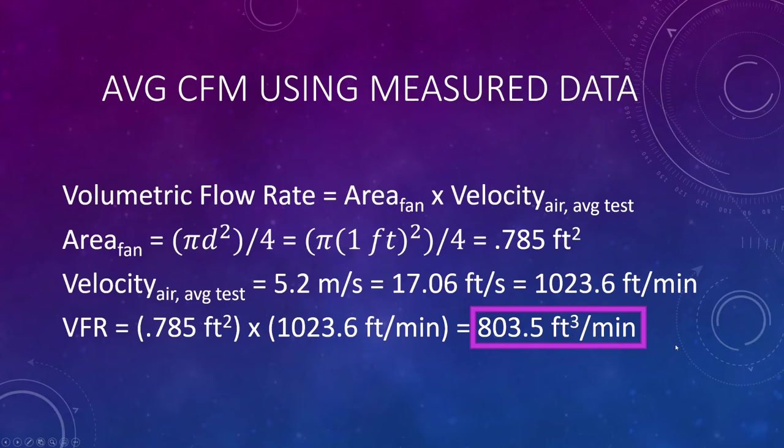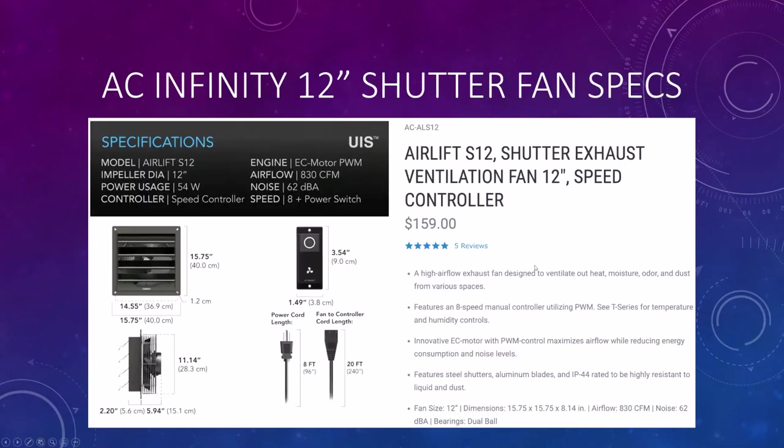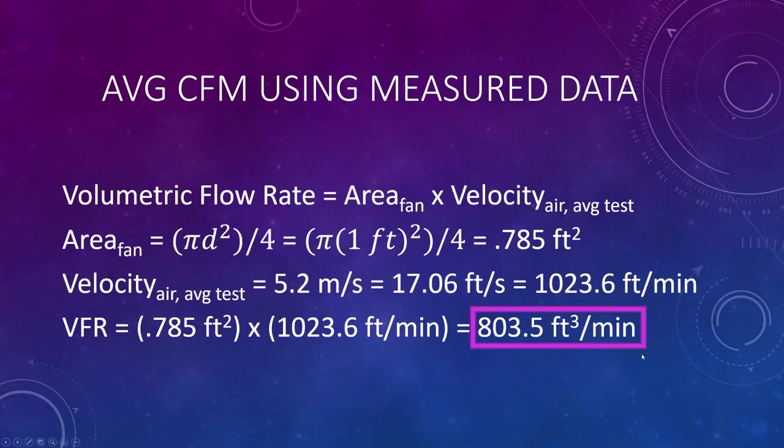So what I did was I looked at AC Infinity's website. These guys are pretty reputable. And I ended up looking at their 12 inch shutter fan. And if you look in the bottom right hand corner of the picture right here, they claim they can get an airflow of 830 CFM out of their 12 inch fan. So this is actually pretty comparable to the 803.5 that I calculated with the average velocity coming out of the fan that I got off Amazon.